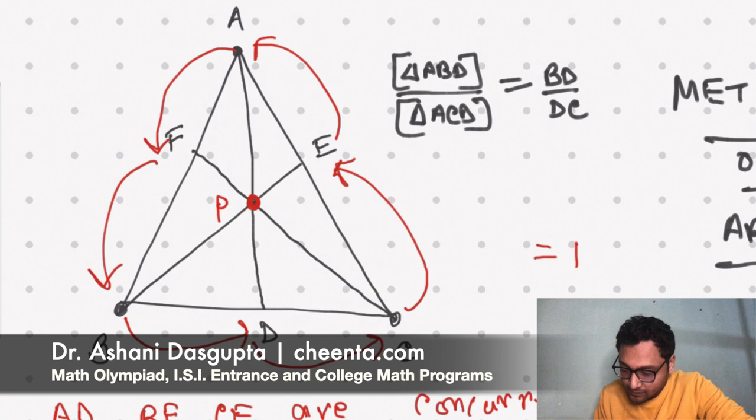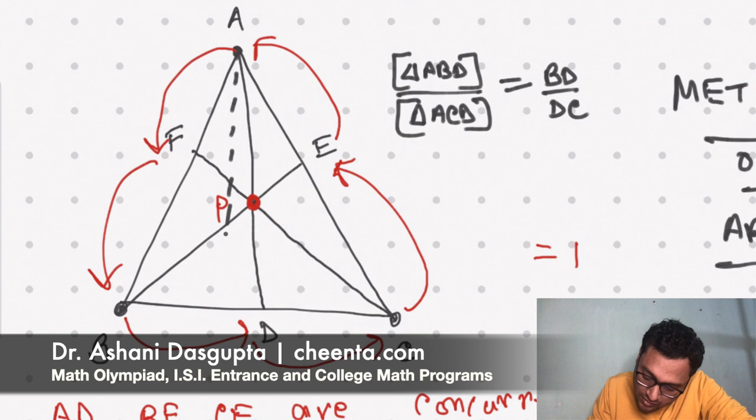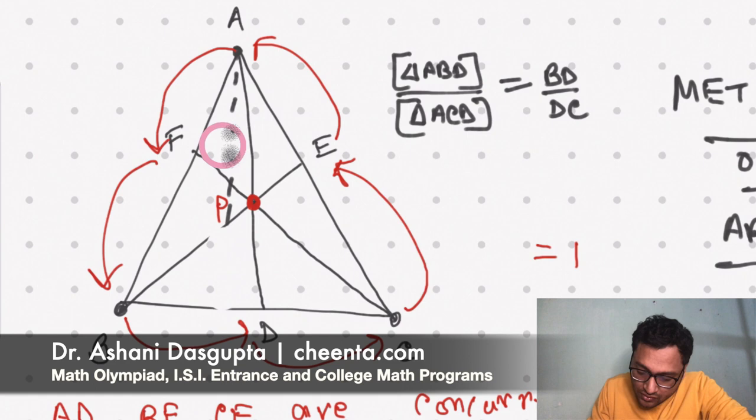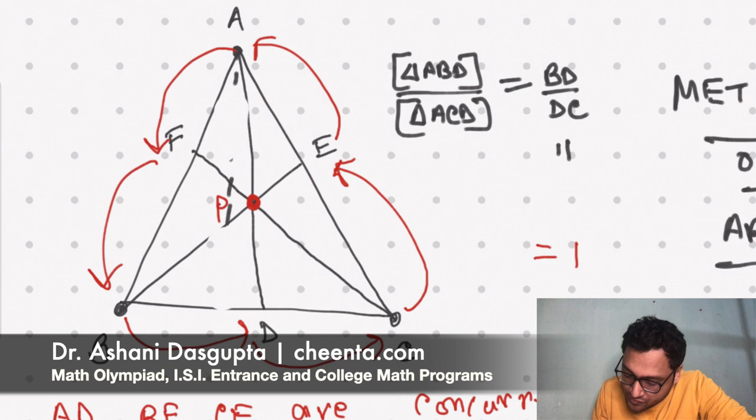Ratio of the bases would be equal to the ratio of the areas of the triangle. Why is that? Well, if you drop a perpendicular, both of the triangles will have the same height, so if you take the ratio of the areas, the heights will cancel off, half will cancel off, only the ratio of the bases will remain. Okay, so now that we understand this, we can also say that this BD by DC is equal to triangle PBD by triangle PCD, the ratio of these two areas.